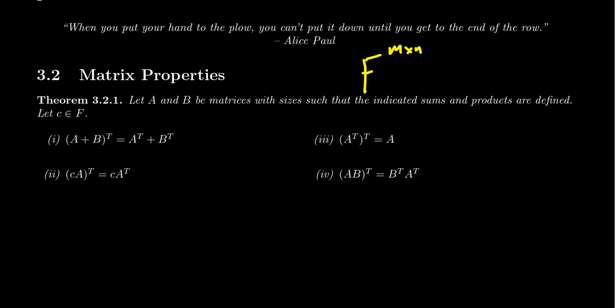In the previous section, we introduced some new operations that didn't have counterparts for the vector spaces studied in Chapter 2. Some examples would be the trace map, the transposition, and matrix multiplication. What type of properties can we say about those operations? Those are the things I want to talk about right here.